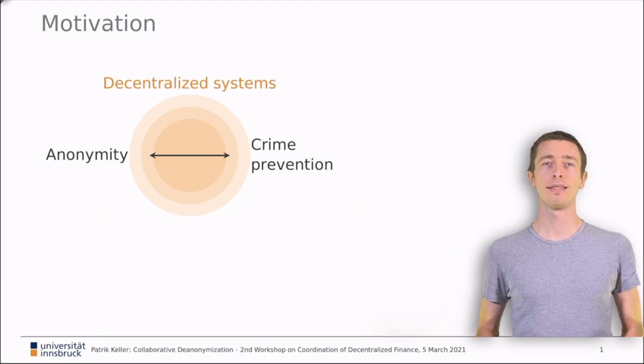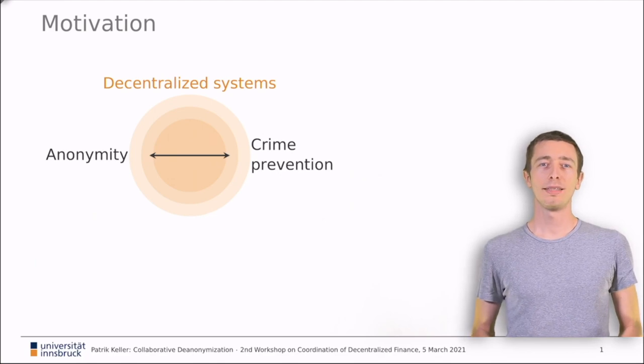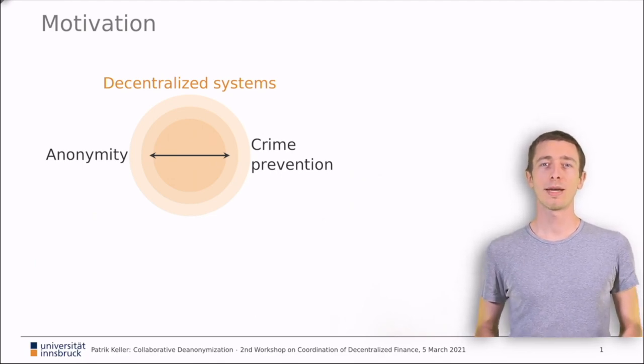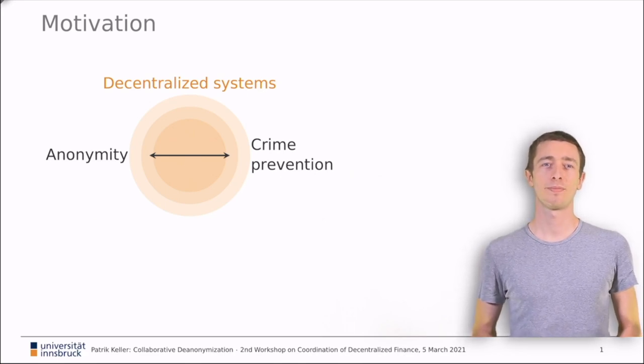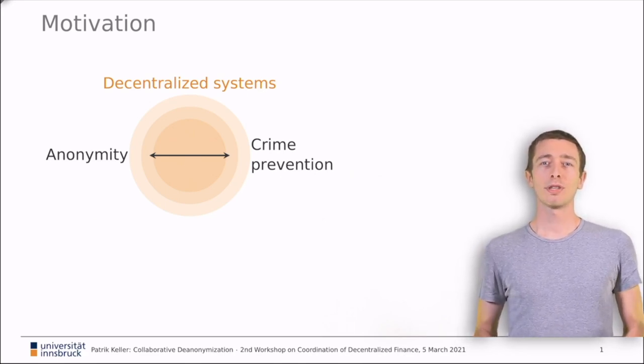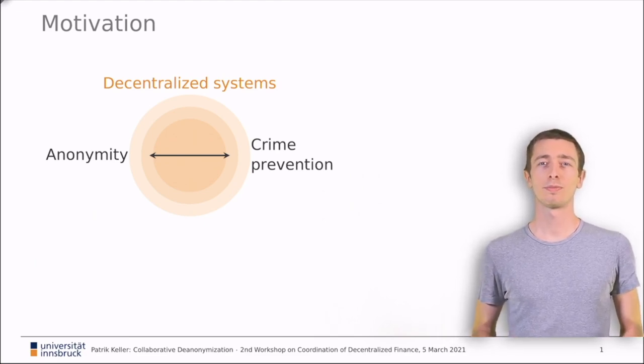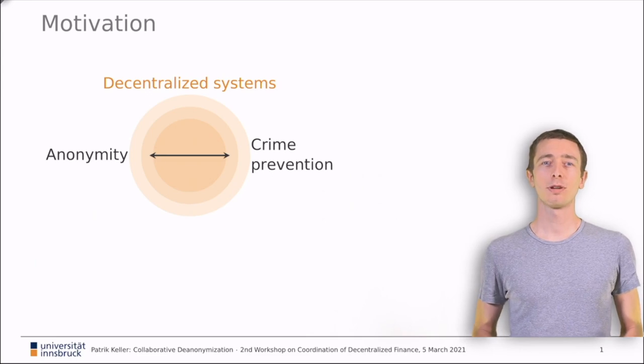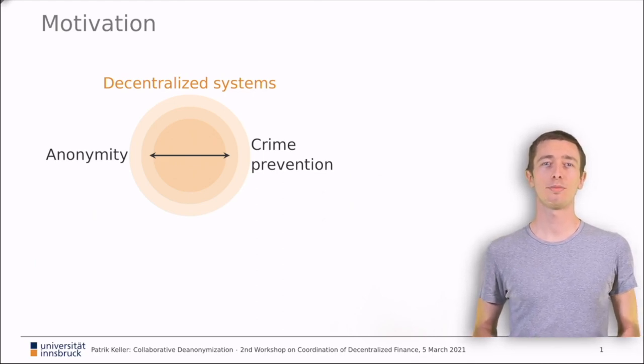When we say decentralized system, we mean systems without central control. The lack of central control usually implies nobody dictates the rules. Especially no single party can sneak in a de-anonymization scheme. We are mostly interested in cryptocurrencies such as Bitcoin, Ethereum and Monero. These systems strongly rely on the peer-to-peer principle. Everybody contributes a little bit and decisions are taken jointly following some protocol.